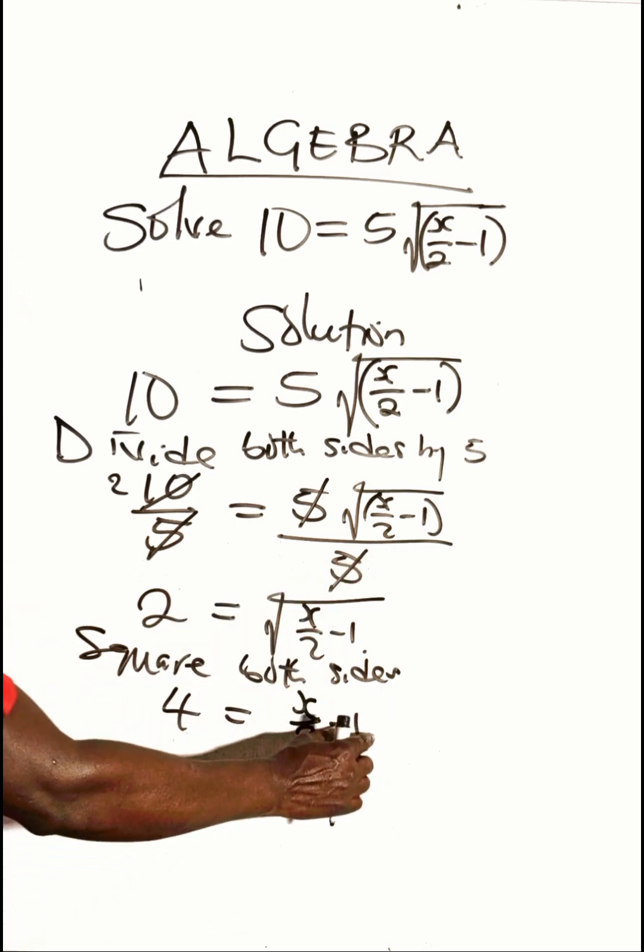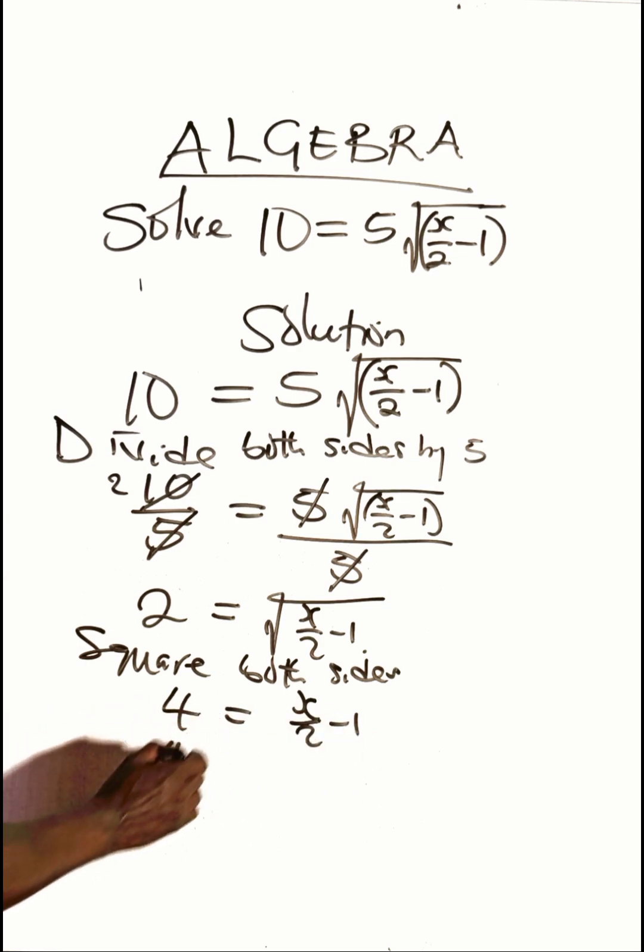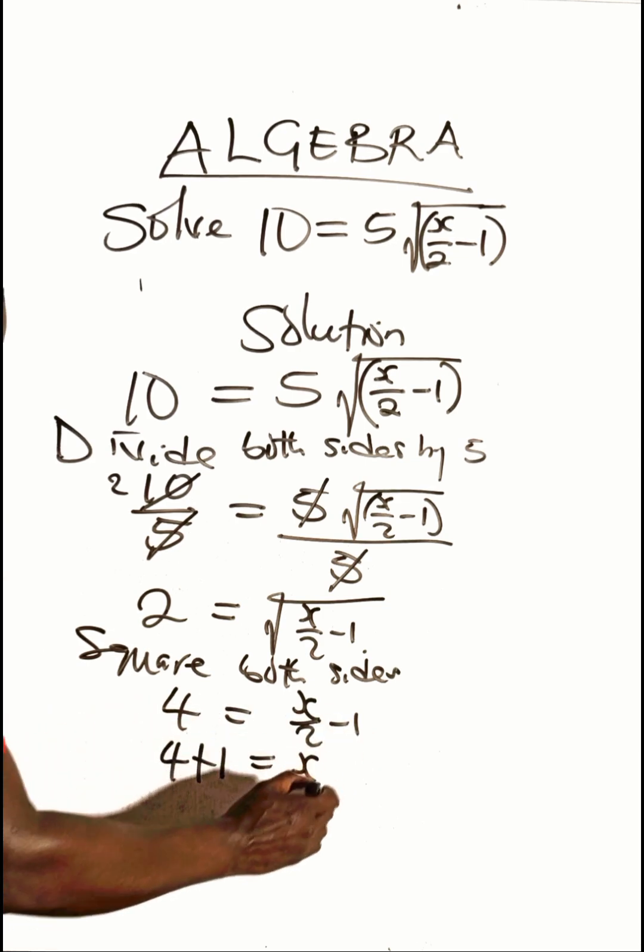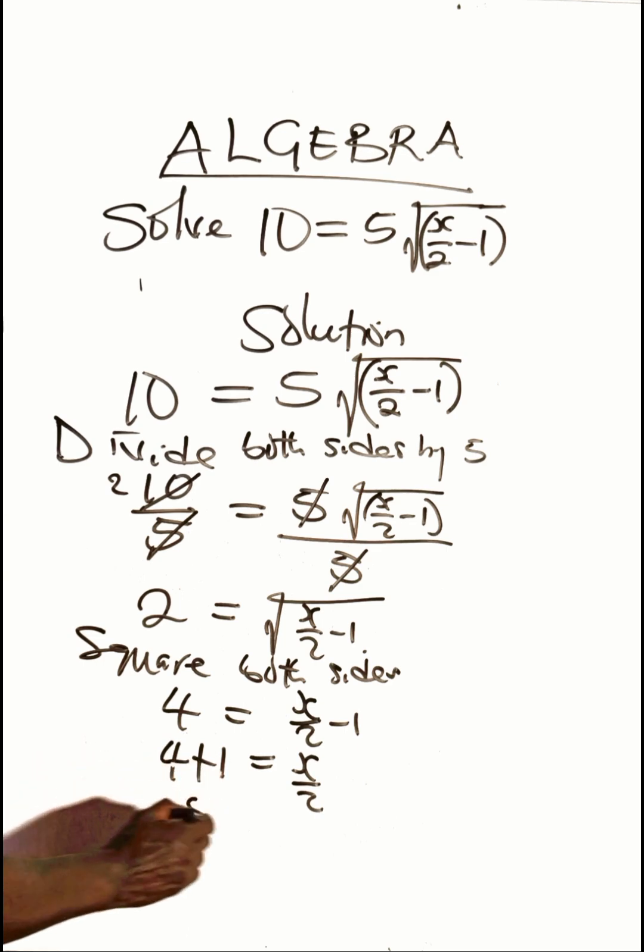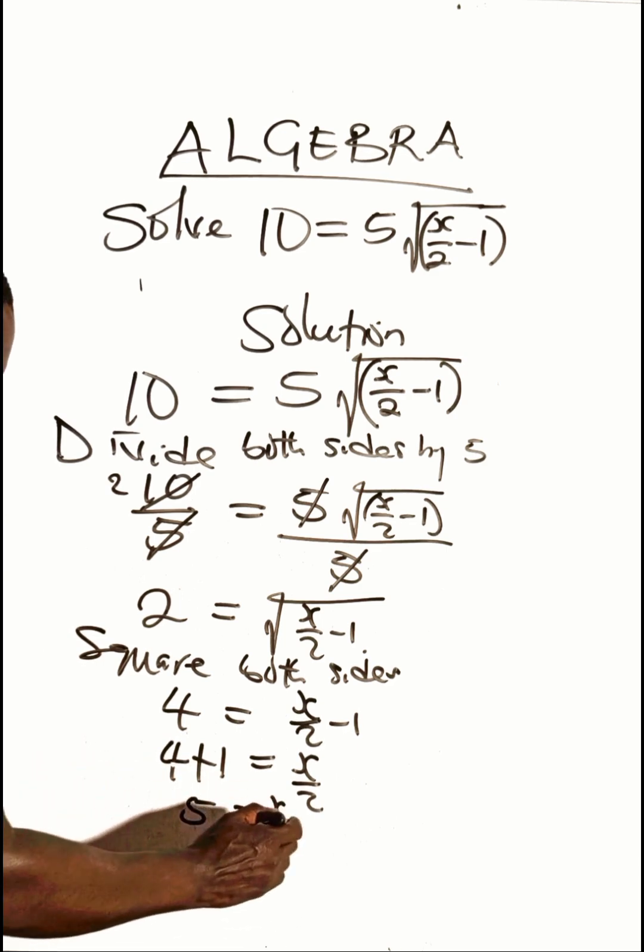Let's collect like terms. Bring minus 1 to this side, that will be 4 plus 1, while x over 2 remains here. 4 plus 1 is 5, and x over 2 here.